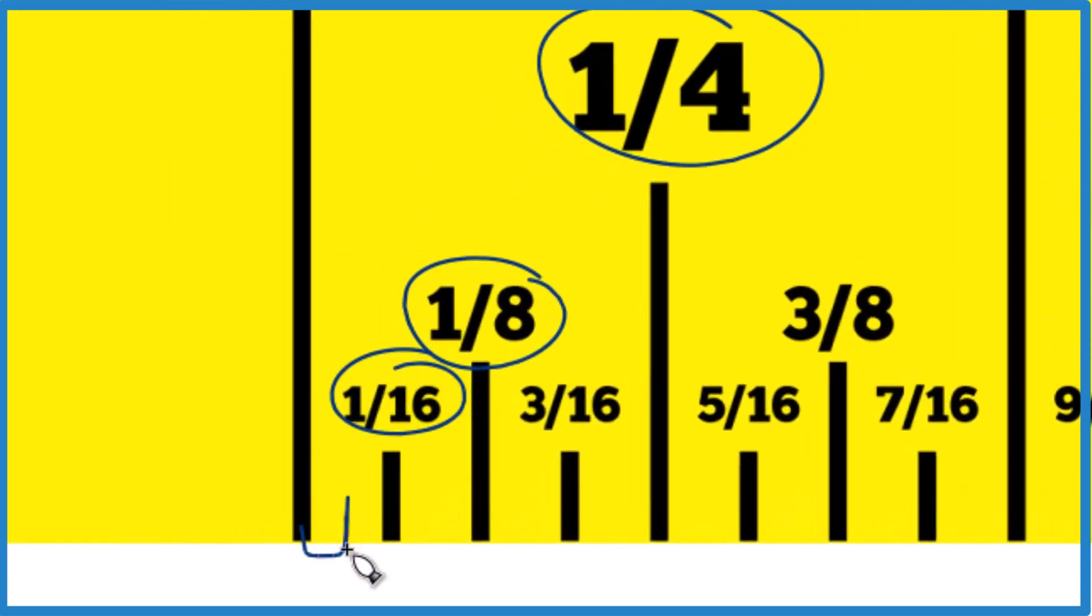So right here, this space right here, that represents 1/32 of an inch. And we have 19/32, so let's divide all of this into 32nds.